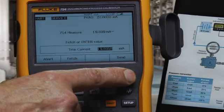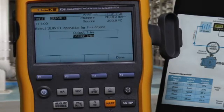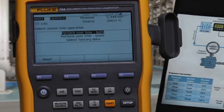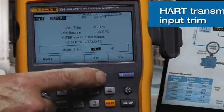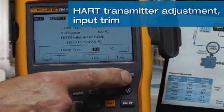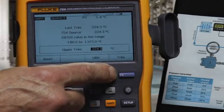Next we're going to trim the input to the transmitter, the input A to D. We're going to trim the lower range value first, and continue and trim the upper range value.